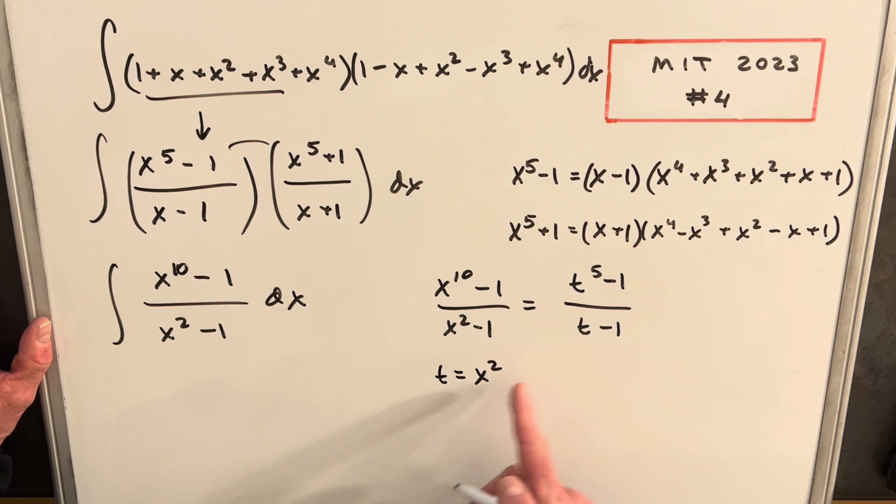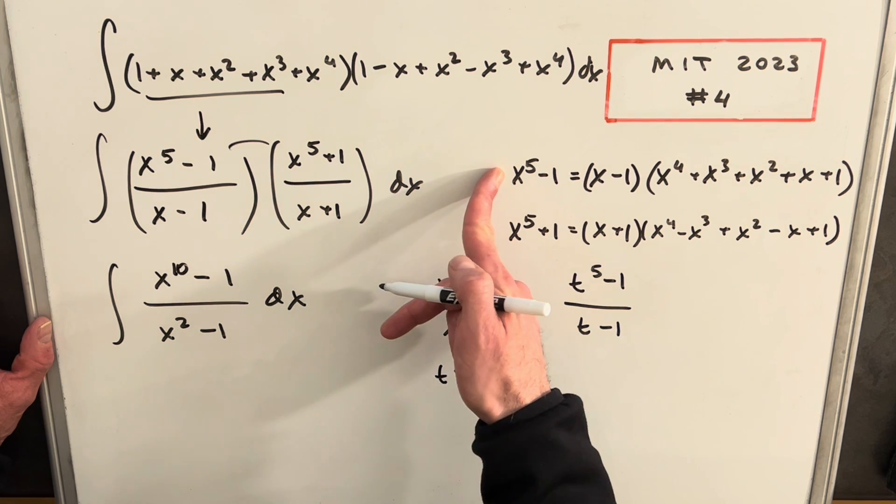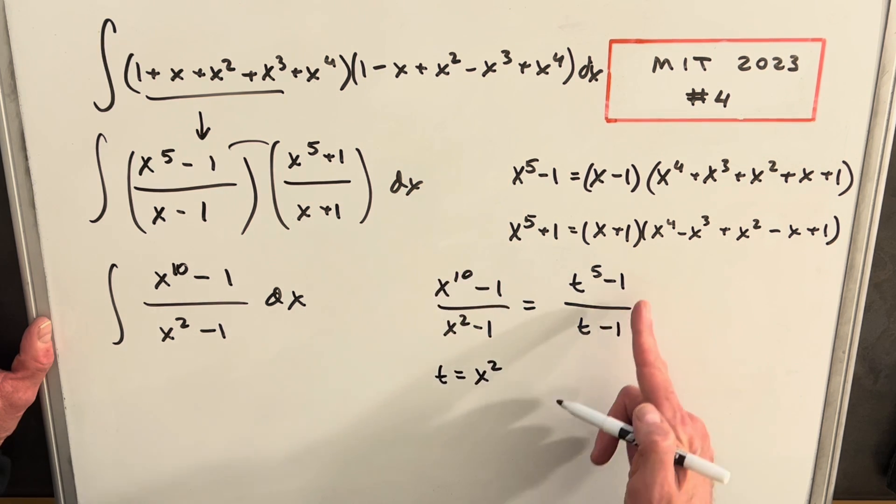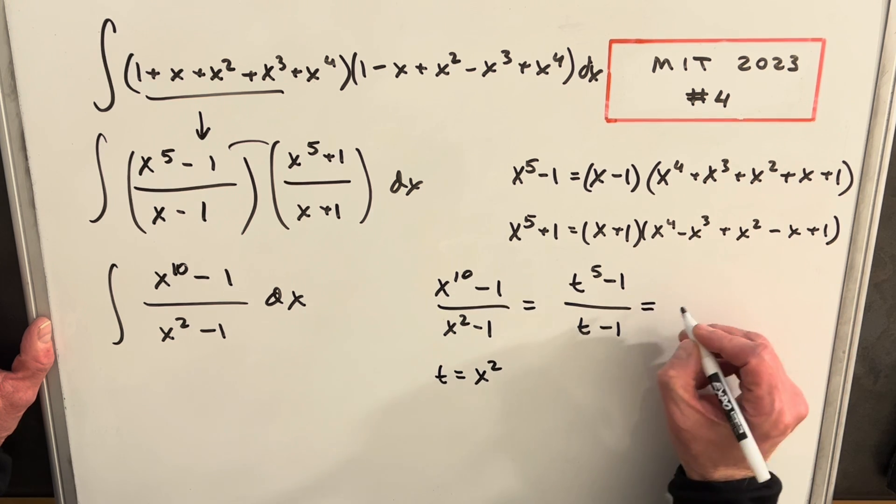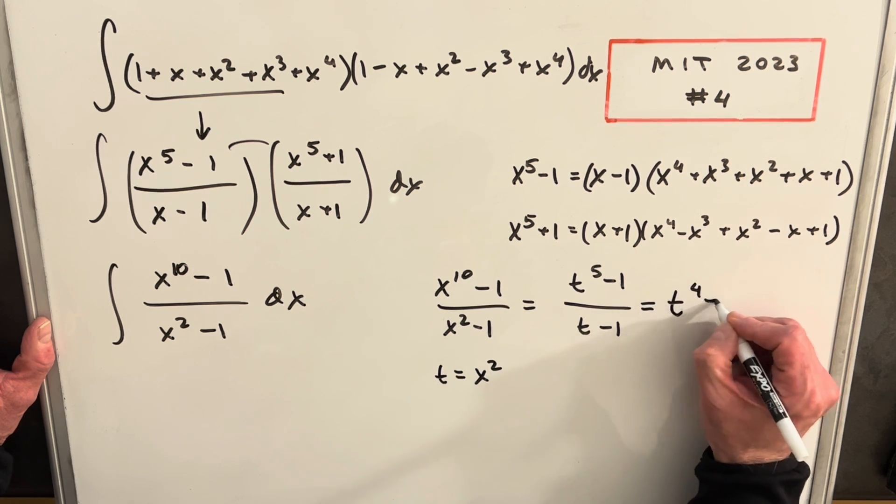But just with that one substitution, then we see that this is really exactly this when we divide it by (x - 1). t⁵ - 1 over t - 1 has to be this thing just in t. So this whole thing is going to be t⁴.